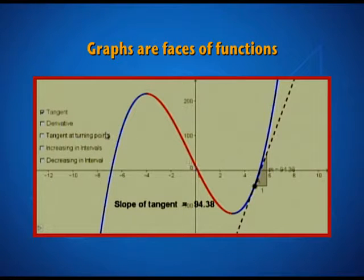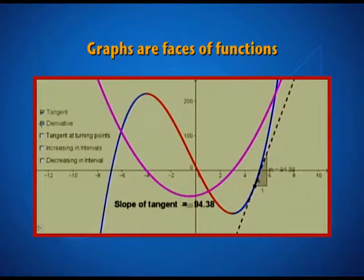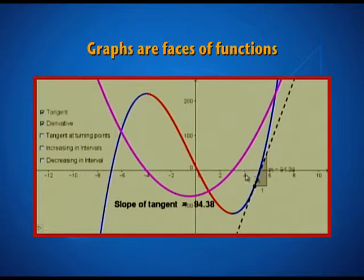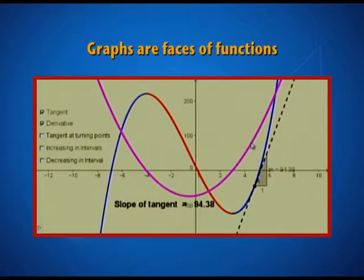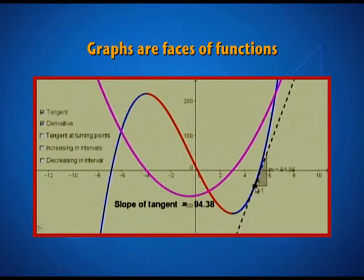We can also examine the same concept by looking at the derivative of this function, which in this case is the pink graph. As the tangent slope is positive, so is the derivative. From this point onwards, which is the value 3 on the x-axis, the graph of the derivative lies above the x-axis. Therefore, f'(x) is positive — that is, the function is an increasing function.